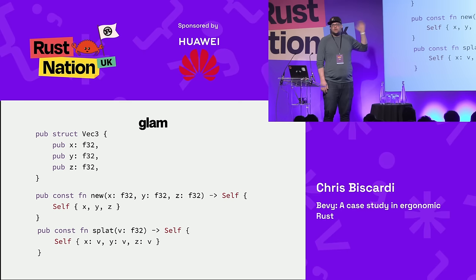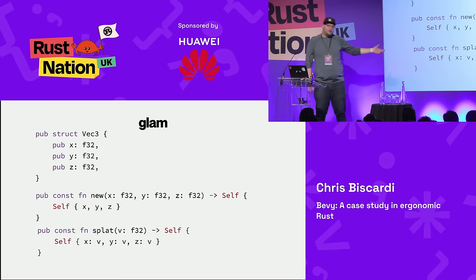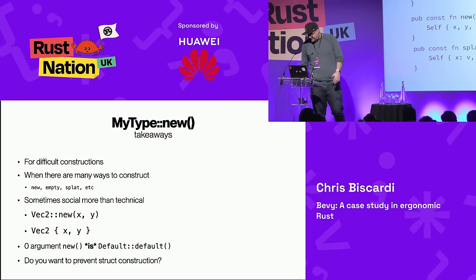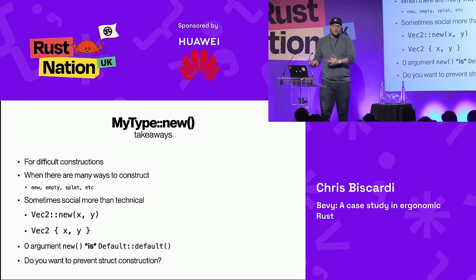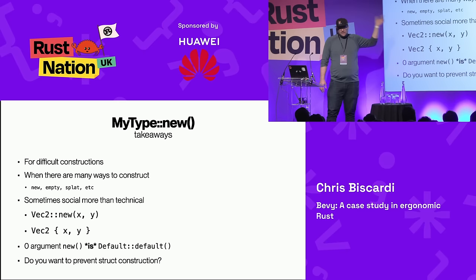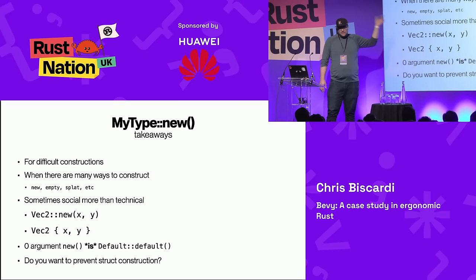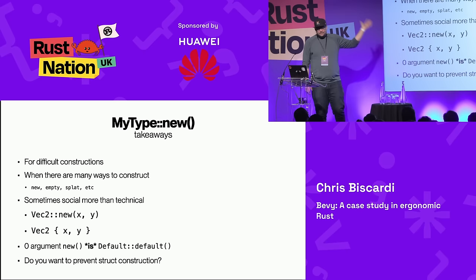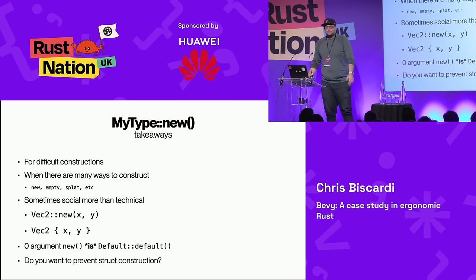New and things like new — like empty — are common across many crates. Glam powers Bevy's Vec2, Vec3, and all the math. You can see how new can take arguments; it doesn't need to be a zero-argument default. If you have specific ways to construct your values, like `splat` — same value in all three slots — you make construction easier, only requiring users to supply what they need to care about.